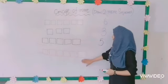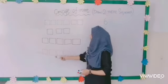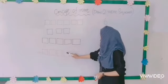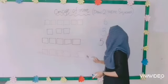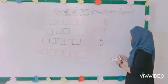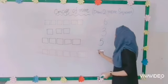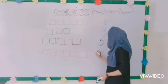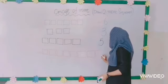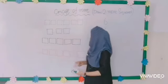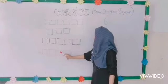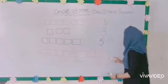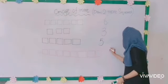तो अब हम यहाँ पर red squares count करेंगे। Count with me: one, two, three, four, five, six. हमारे पास six red squares हैं। तो teacher इन में two more add कर देंगी, दो और बना देंगी: one, two. अब count करेंगे — अब हमारे पास कितने हो गए? One, two, three, four, five, six, seven, eight. अब हमारे पास eight squares हो गए।